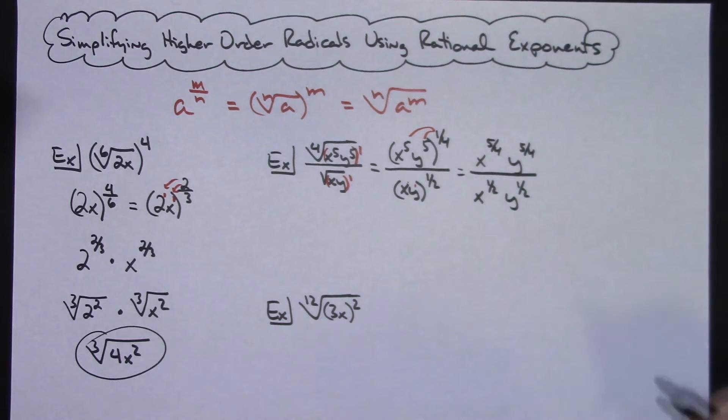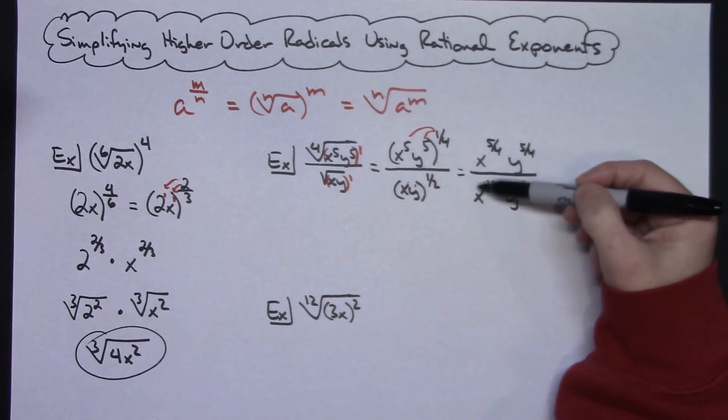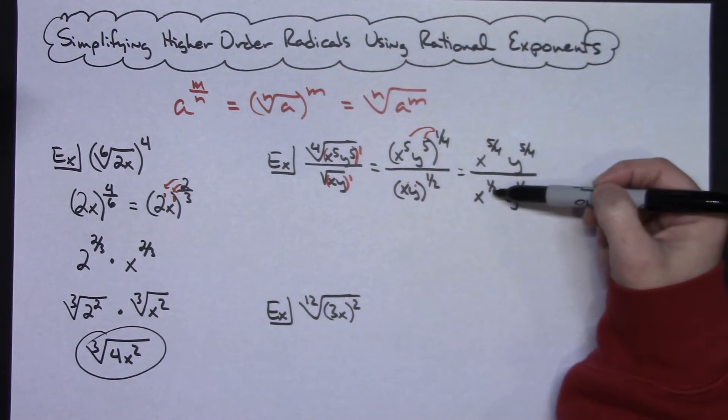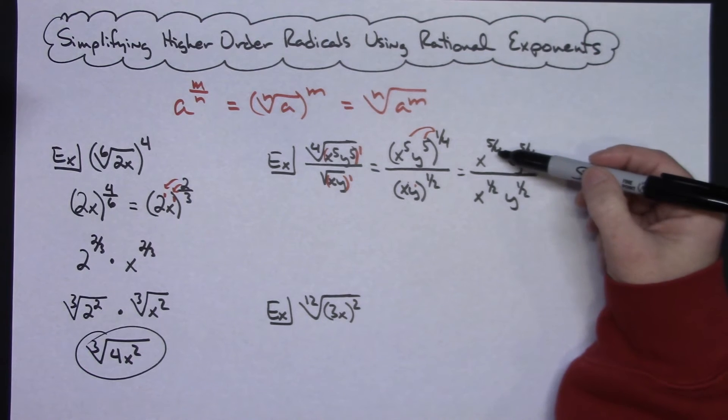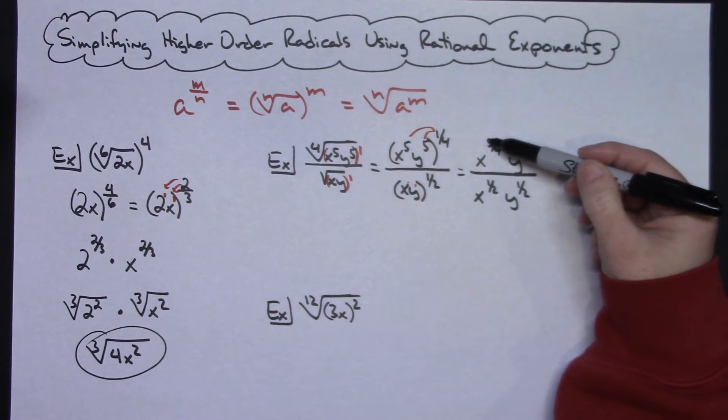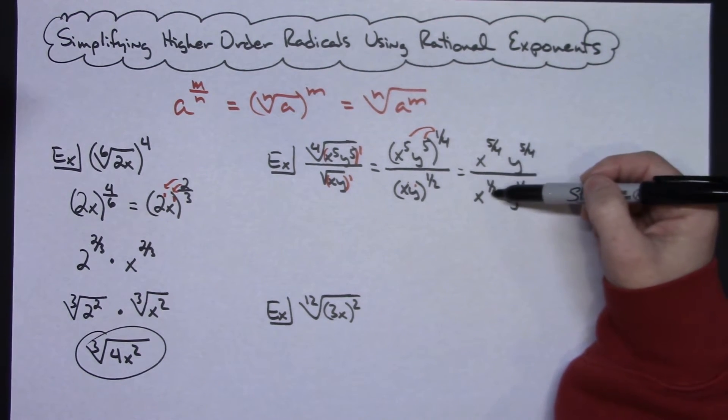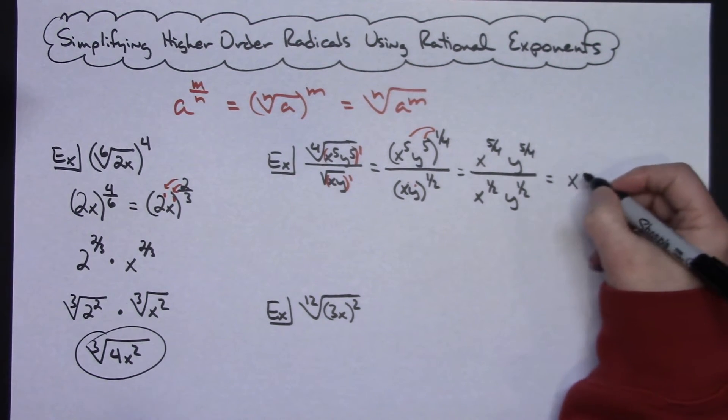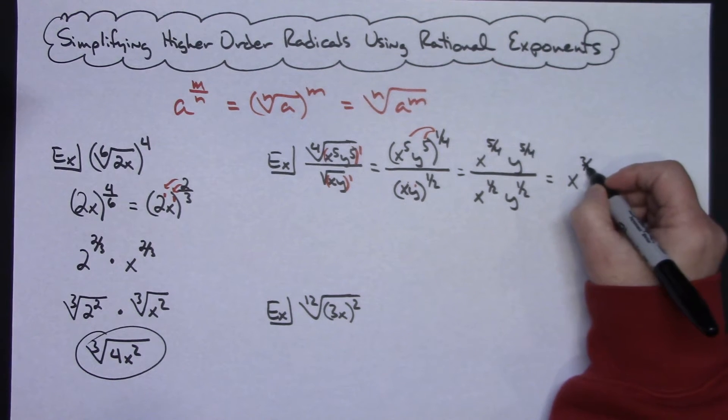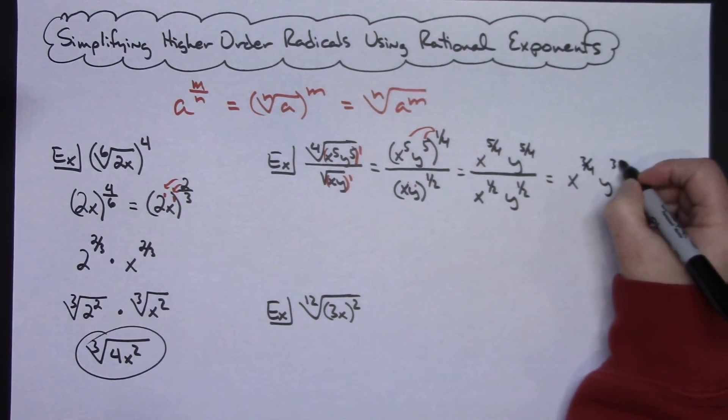Now more laws of exponents. When you're dividing like bases, you subtract those exponents. So you could subtract that by hand or if you're not very good at that, grab a calculator or use your fraction button. But 5/4 minus 1/2 is going to give me 3/4 on both of those. So then I'm going to have x to the 3/4, y to the 3/4.